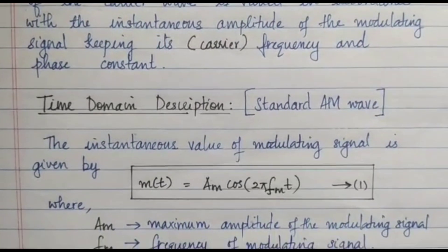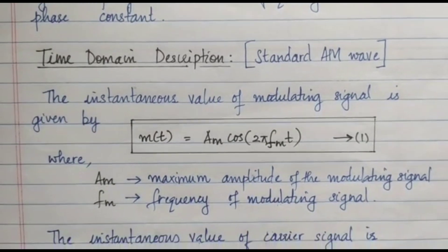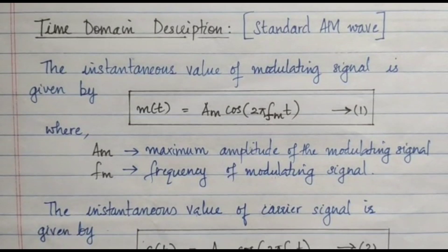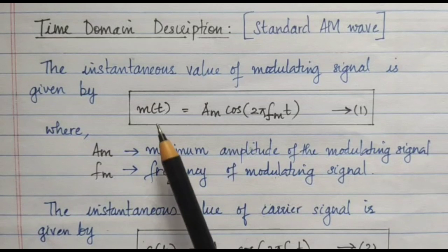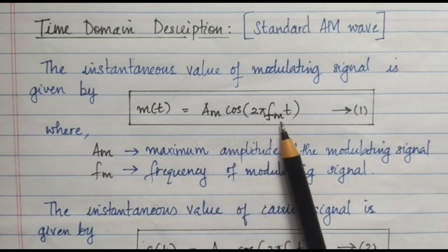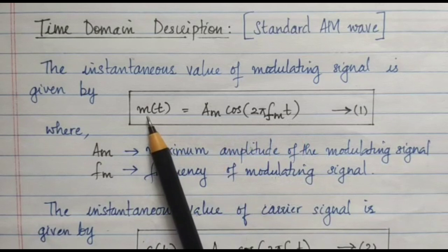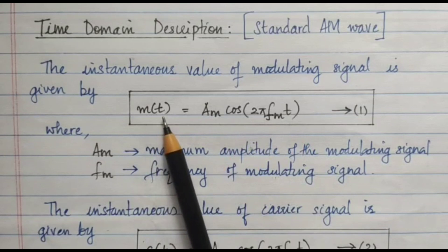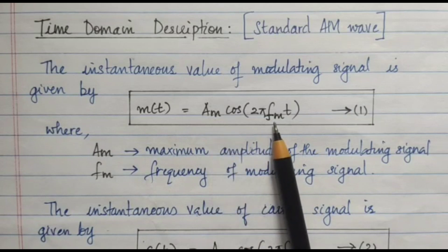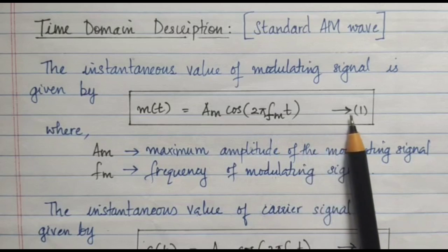Now we will see the time domain description. In the time domain description we are going to find the equation for a standard AM wave. The instantaneous value of the modulating signal is given by M(t) = AM cos(2π FM t). Here M(t) is the message signal with respect to time, AM is the amplitude of the message signal, and FM is the frequency of the message signal. This is equation number 1.